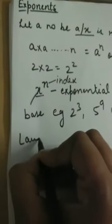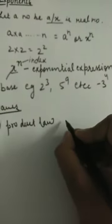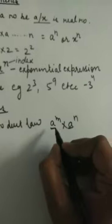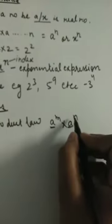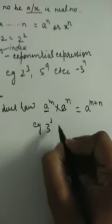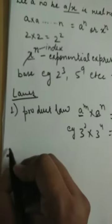The first law is the Product Law. It states that if there are two numbers a power m multiplied by a power n, where the bases are the same but the powers are different, it will be written as a power (m + n). For example, 3 power 2 into 3 power 4 equals 3 power (2 + 4), that is 3 power 6.